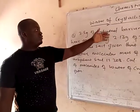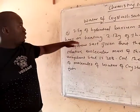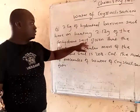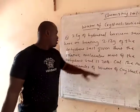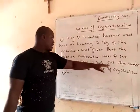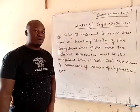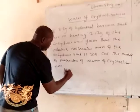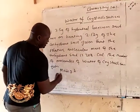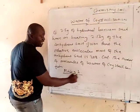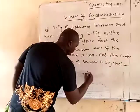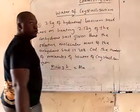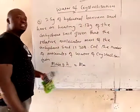Now for a second example: 2.5 grams of hydrated salt, on heating, gives 2.13 grams of the anhydrous salt. The molecular mass of the anhydrous salt is 208. Calculate the number of molecules of water of crystallization. We already have a formula for this: mass of hydrated over mass of anhydrous equals molar mass of hydrated over molar mass of anhydrous.